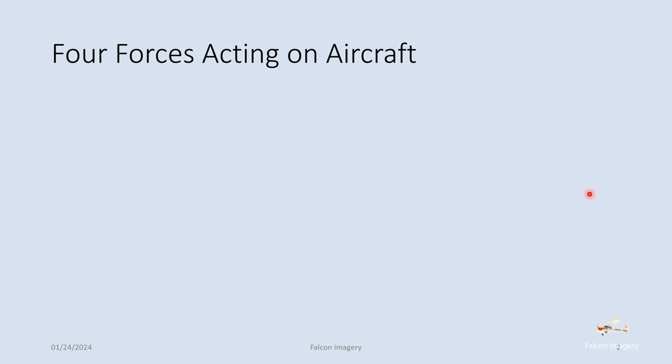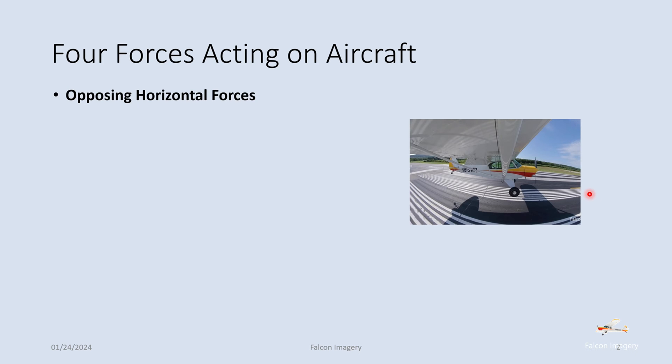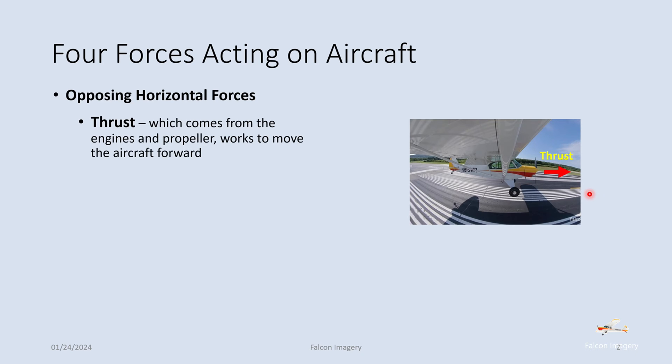We've got four forces that act on an aircraft while it's in flight. We have two forces that work in the horizontal axis that work to oppose each other. The first one is thrust, which comes from the engines and the propeller, and they work to move the aircraft forward. Then we have an opposing force known as drag, that opposes the thrust and works to effectively slow the aircraft down.